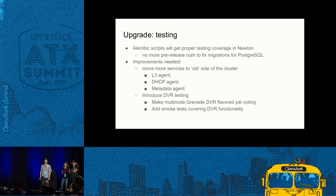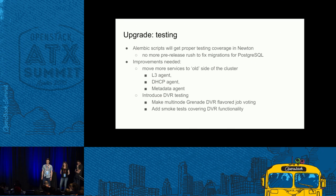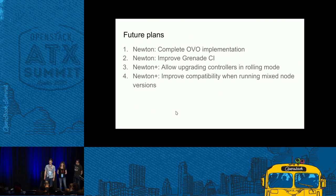There's also some improvement needed. We need to move more services to the outside of the cluster, add the versioned code for the L3 agent, DHCP agent, and metadata. We need more improvement in DVR testing — we have the DVR multi-node flavor job, but it's not voting; we need to make it vote and add more tests in the smoke run to cover DVR functionality. As for future plans: first of all, we need to complete the Oslo Versioned Objects implementation — we hope to do this in the Newton cycle, because it's a requirement for the next steps, like allowing upgrading controllers in rolling mode and improving compatibility when running mixed versions of controller nodes.